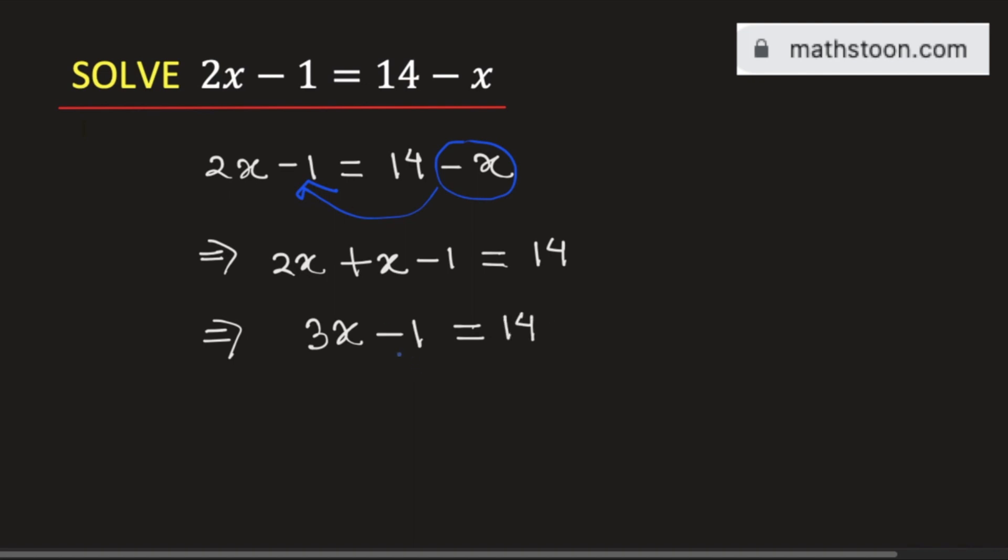Now we will bring this constant term into the right hand side. So this will be positive 1. So we will have 3x is equal to 14 plus 1, which is equal to 15.